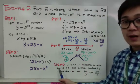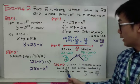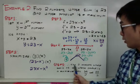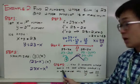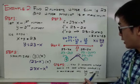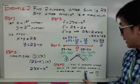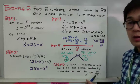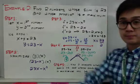Yung step number 5, i-organize nyo yung sagot nyo into a sentence. Therefore, the two numbers whose sum is 23 and whose product is a maximum will be 69 over 2 and 23 over 2, based sa solution natin.